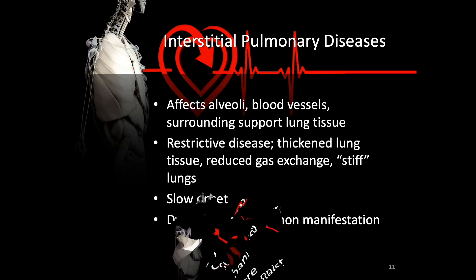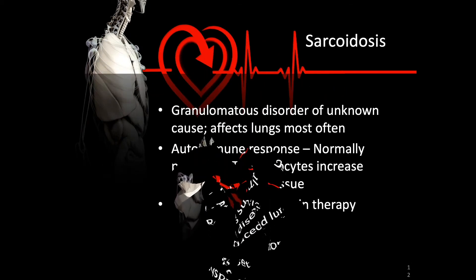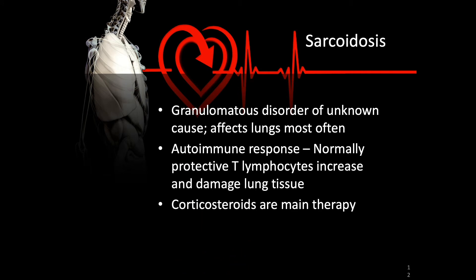Interstitial pulmonary diseases include sarcoidosis, idiopathic pulmonary fibrosis, and occupational lung disease. These affect the alveoli, the blood vessels, and surrounding support lung tissues. They are restrictive diseases in which thickened lung tissues are stiffer than normal, making it difficult to bring air in and reducing gas exchange. These diseases have a slow onset and dyspnea is the most common manifestation. Sarcoidosis is a granulomatous disorder of unknown cause where the lung is affected most often. It is an autoimmune response in which T lymphocytes increase and damage lung tissues. Corticosteroids are the main therapy, along with dyspnea management and long-term community health care resources like the American Lung Association.